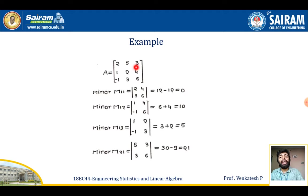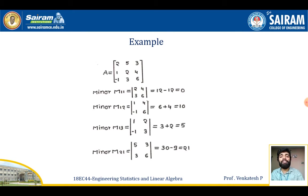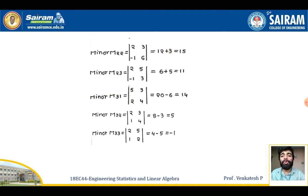For M13, deleting the first row and third column, the determinant of [1, 2; −1, 3] equals 5. For M21, deleting the second row and first column, the determinant of [5, 3; 3, 6] equals 21. Continuing: M22 = 15, M23 = 11, M31 = 14, M32 = 5, and M33 = −1.